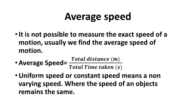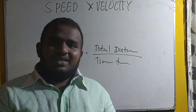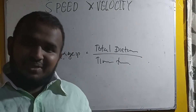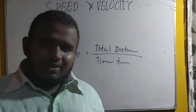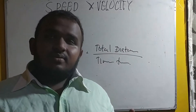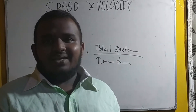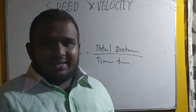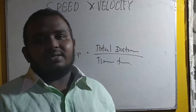For average speed, it is total distance travelled divided by time taken. This is the equation for the average speed. Usually in physics, what we measure is the average speed or the mean speed. There are two equations: the first exact equation for speed is distance divided by time taken, but for average speed, it is total distance travelled divided by total time taken.